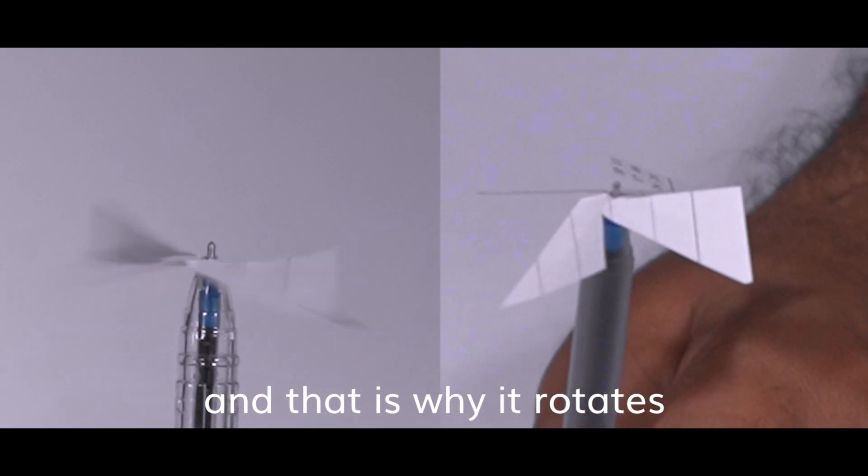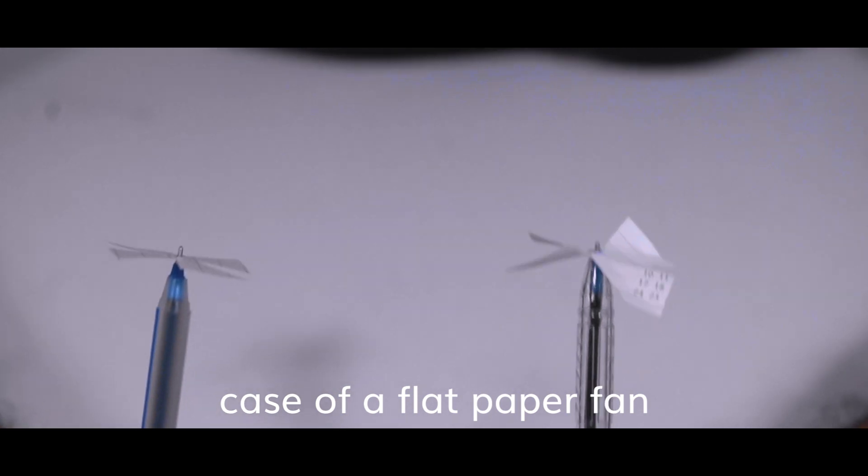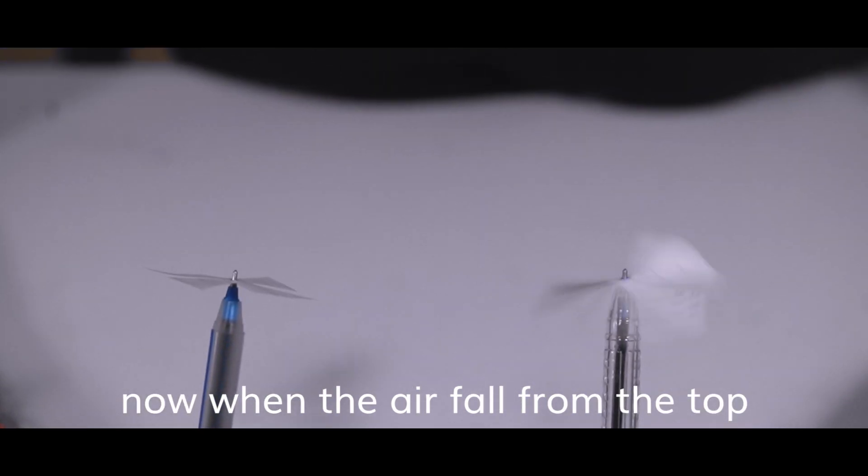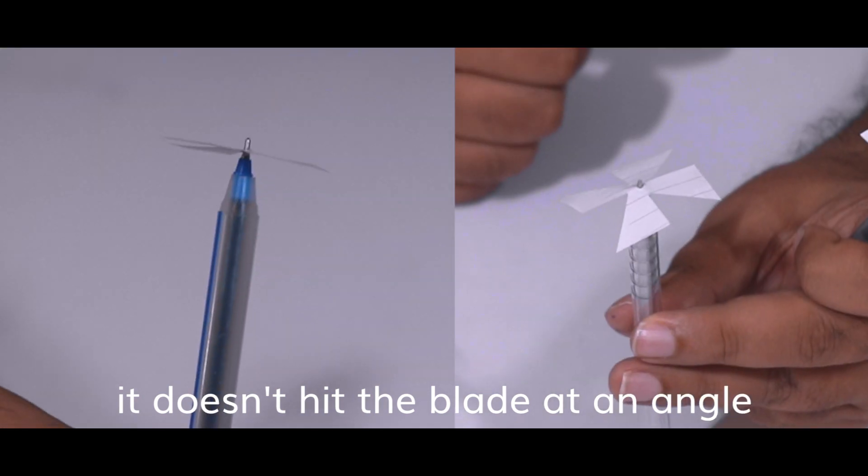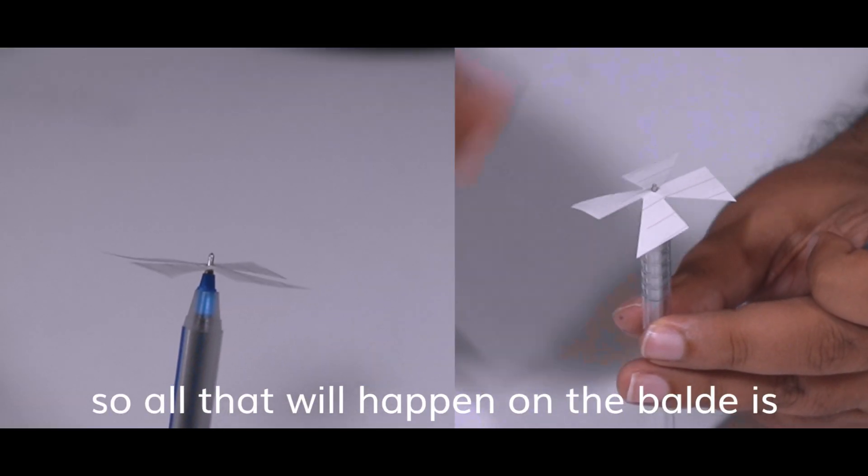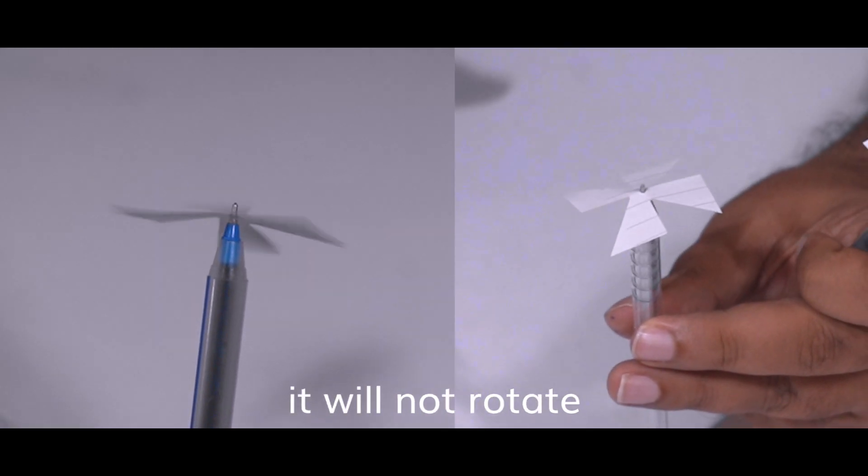Now when you compare it with the case of a flat paper fan, when the air falls from the top, it doesn't hit the blade at an angle. It hits it normally. So all that will happen on the blade is it will just bend a little down. It will not rotate.